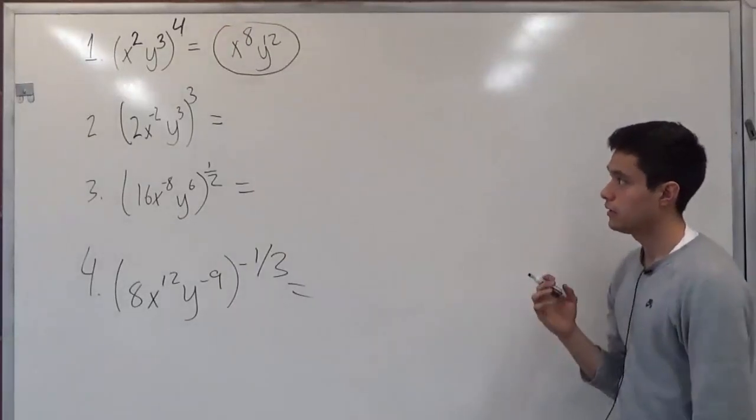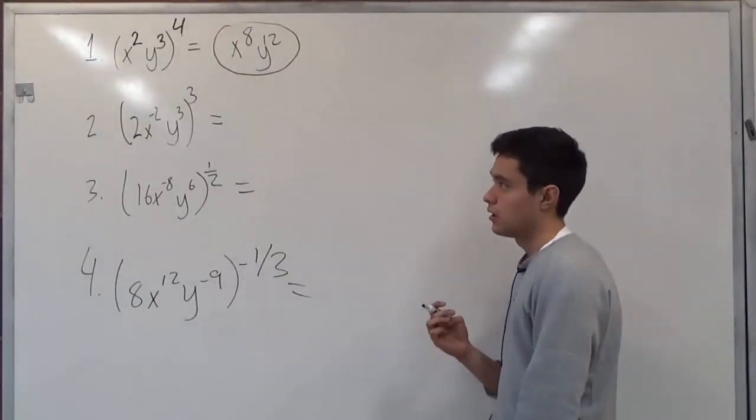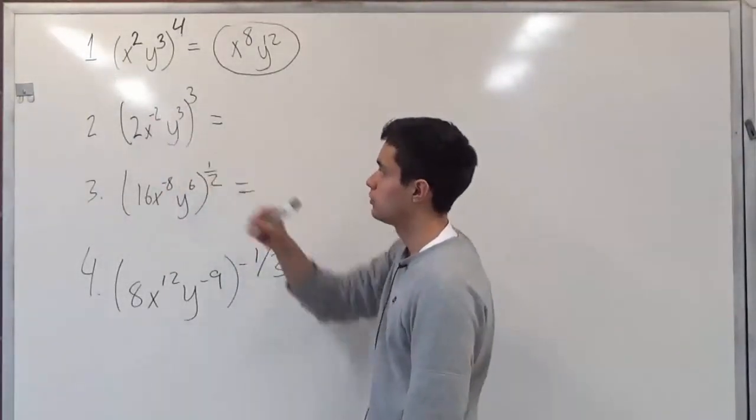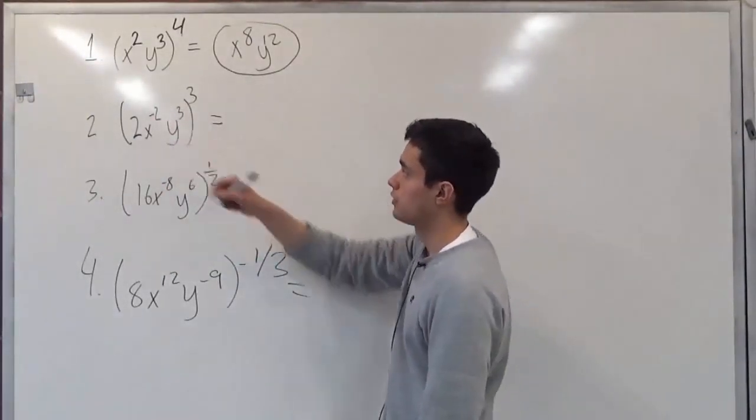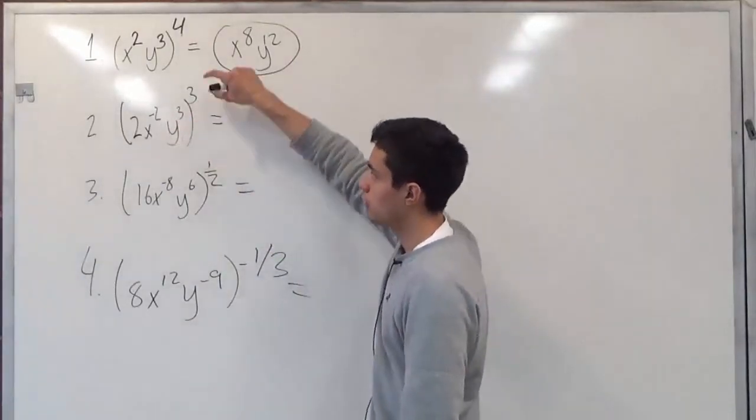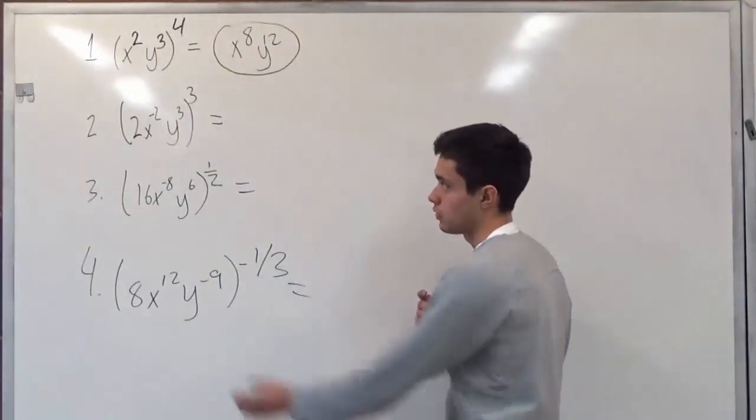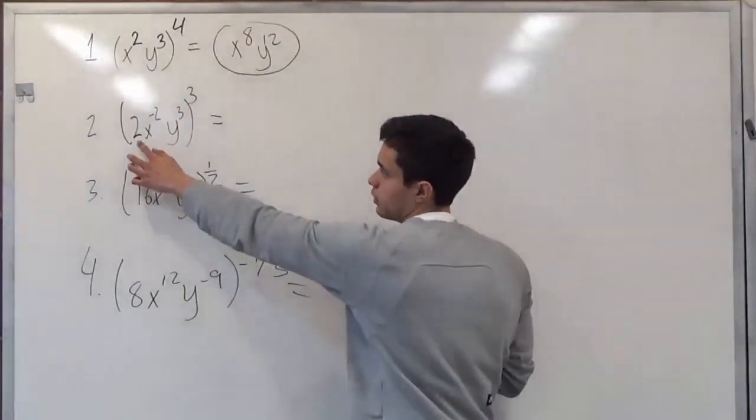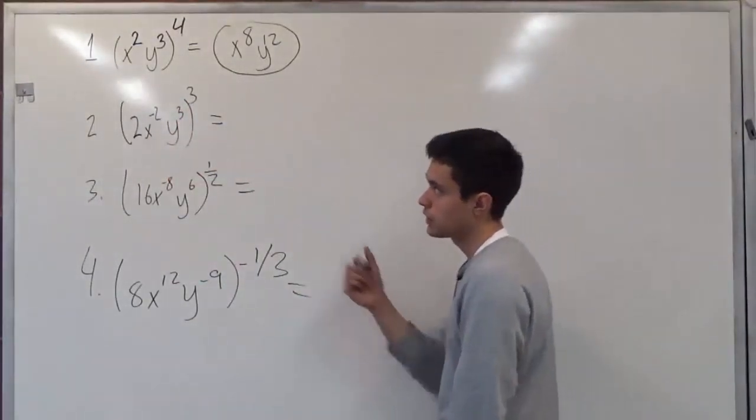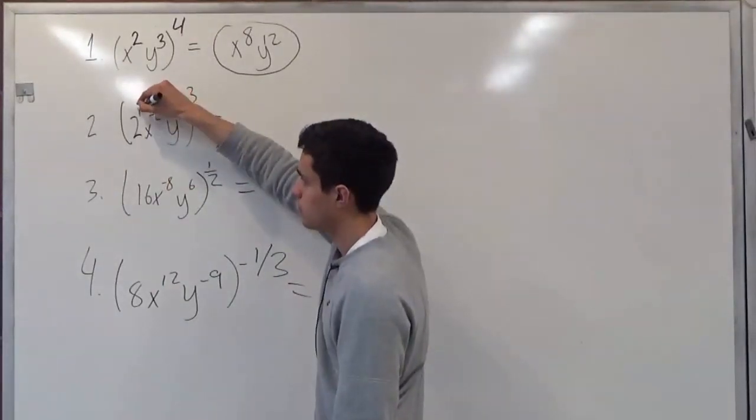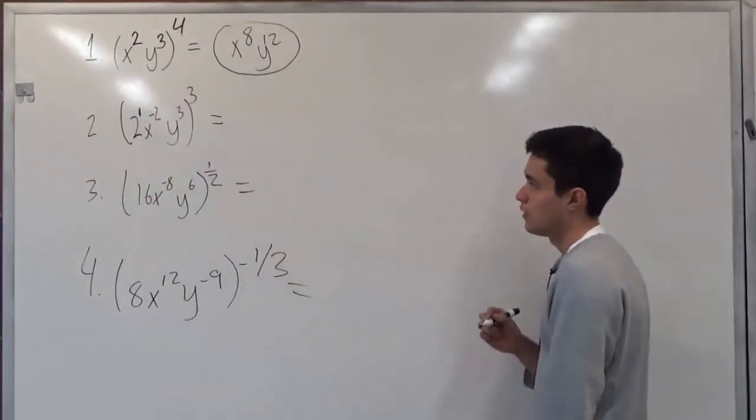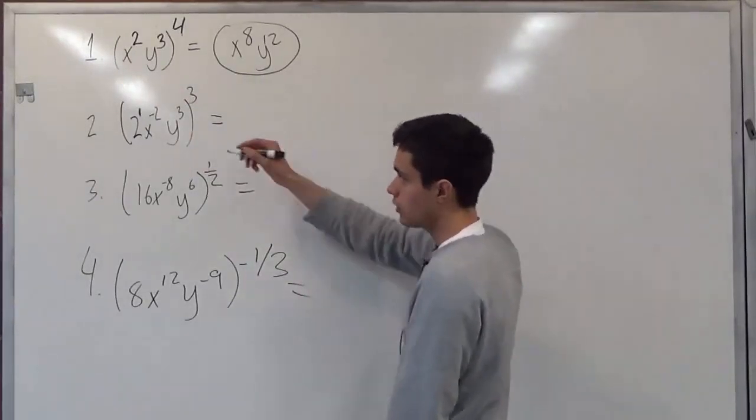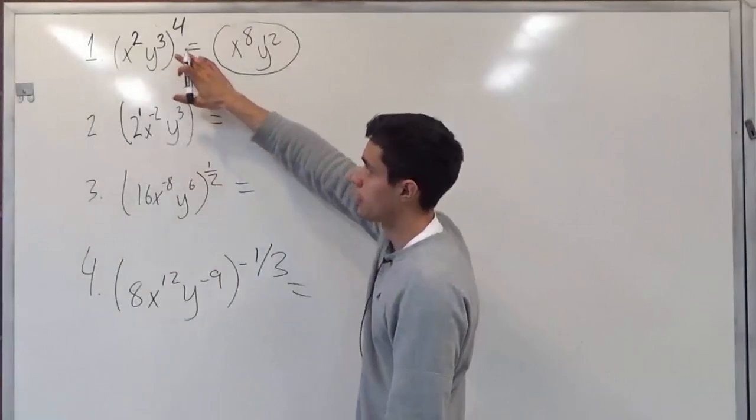So as we move on to the second one, we understand that it says 2x to the negative 2 times y to the third to the third power. So this whole will be to the third power. But this one has a leading coefficient, so let's pretend this one has a base power of 1.